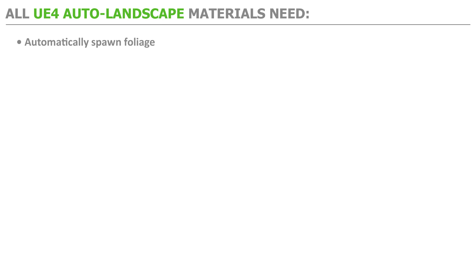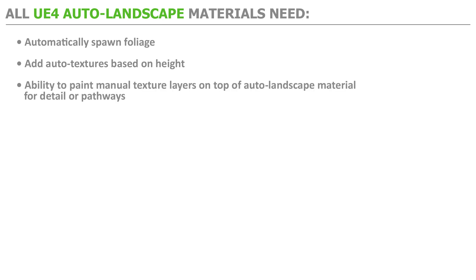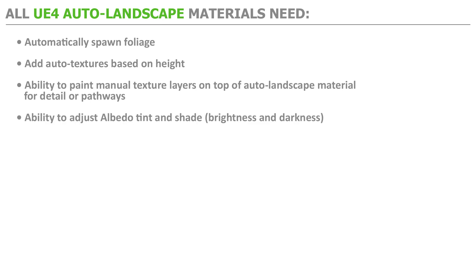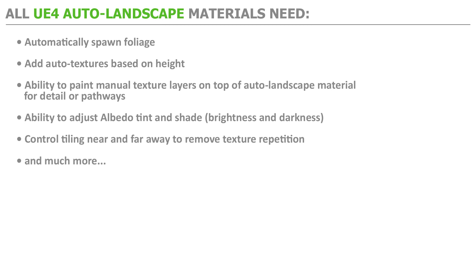For example, you might want grass, bushes, and trees to spawn on the grass texture, and rocks and twigs on the dirt texture. You would also need to set up height-based texturing instead of just slope, the ability to paint a manual texture layer on top of your auto landscape material for detail or pathways and roads, and control over albedo tint, brightness, and tiling. This first auto landscape material is a starting point that you can begin to expand on and add to.